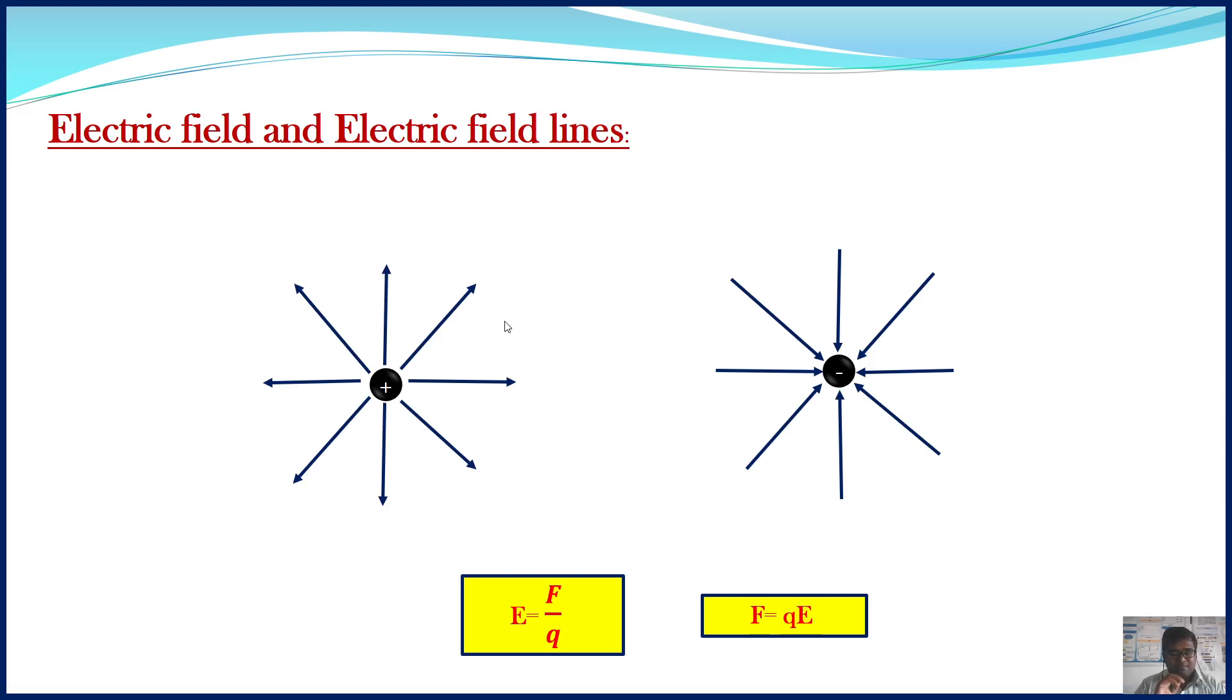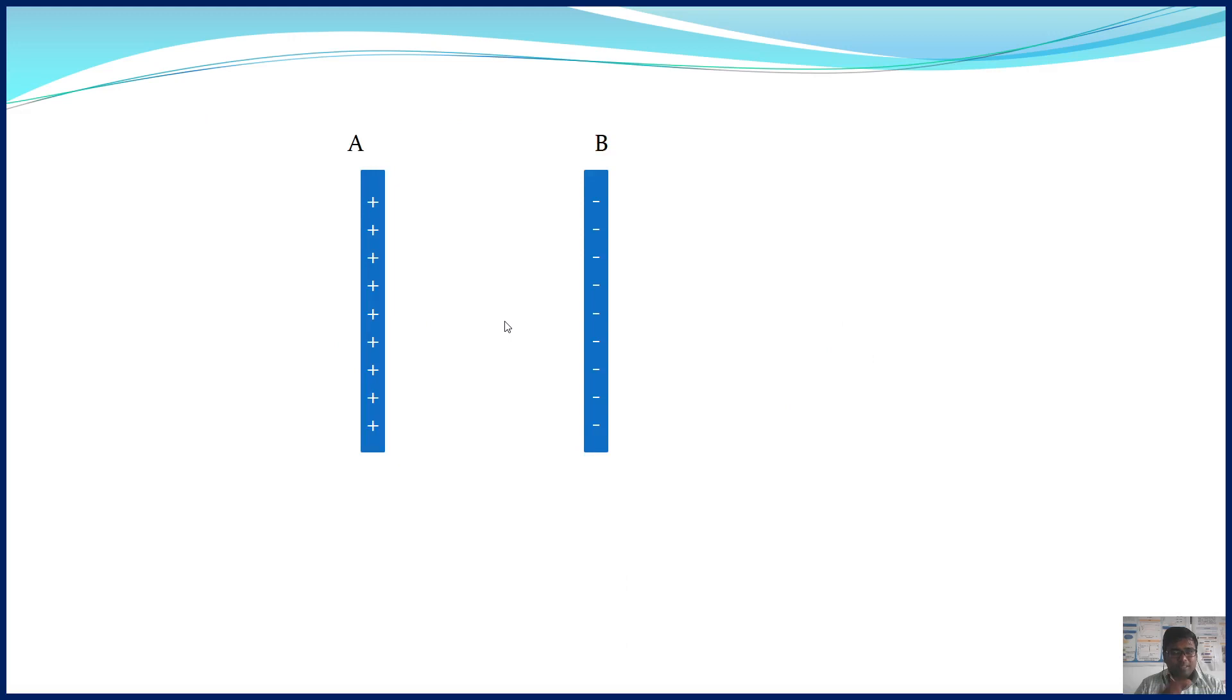Now, let us consider two metal plates A and B. Plate A is positively charged and plate B is negatively charged. These two plates are separated by distance d, and the electric field developed between these two plates is E. The direction of the electric field is from the positive plate to the negative plate.